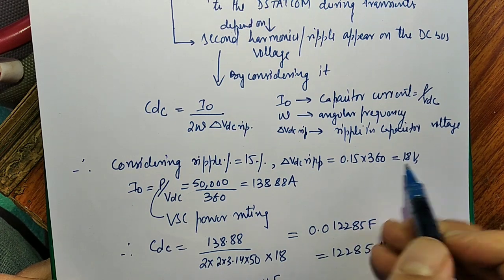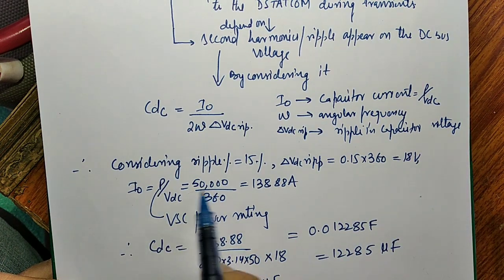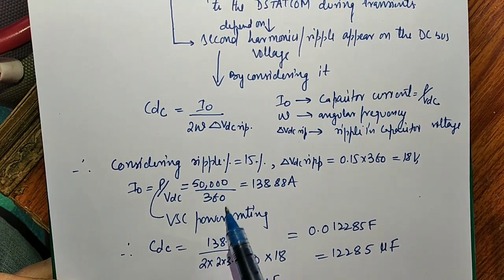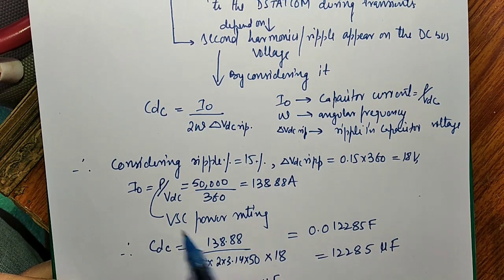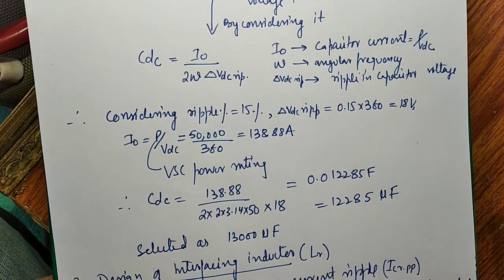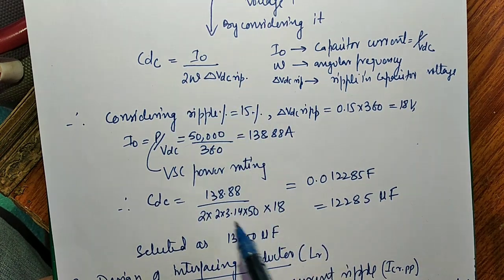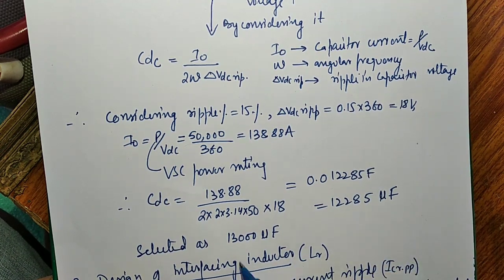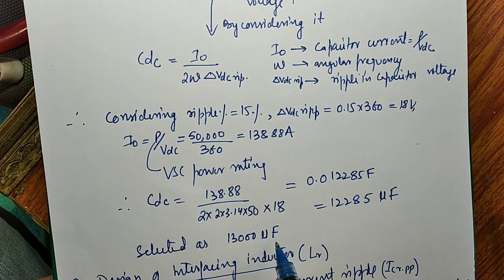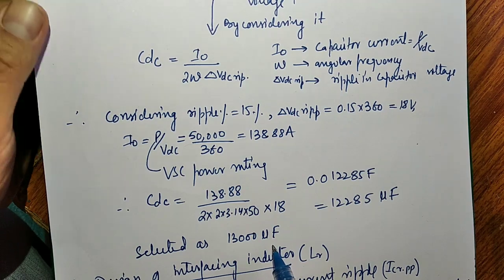We have taken the reference voltage of 360 V, giving ΔV_ripple of 54 V. Wait — delta V ripple is 0.15 × 360 = 54 V. For a 50 kVA system, I₀ equals 50,000 divided by 360, giving the DC capacitor current. After putting all these values into the capacitor equation, we get approximately 12,285 µF. We select 13,000 µF, or any nearby rating available in the market. For simulation purposes you can take any value, but we should use real values in simulation as well.